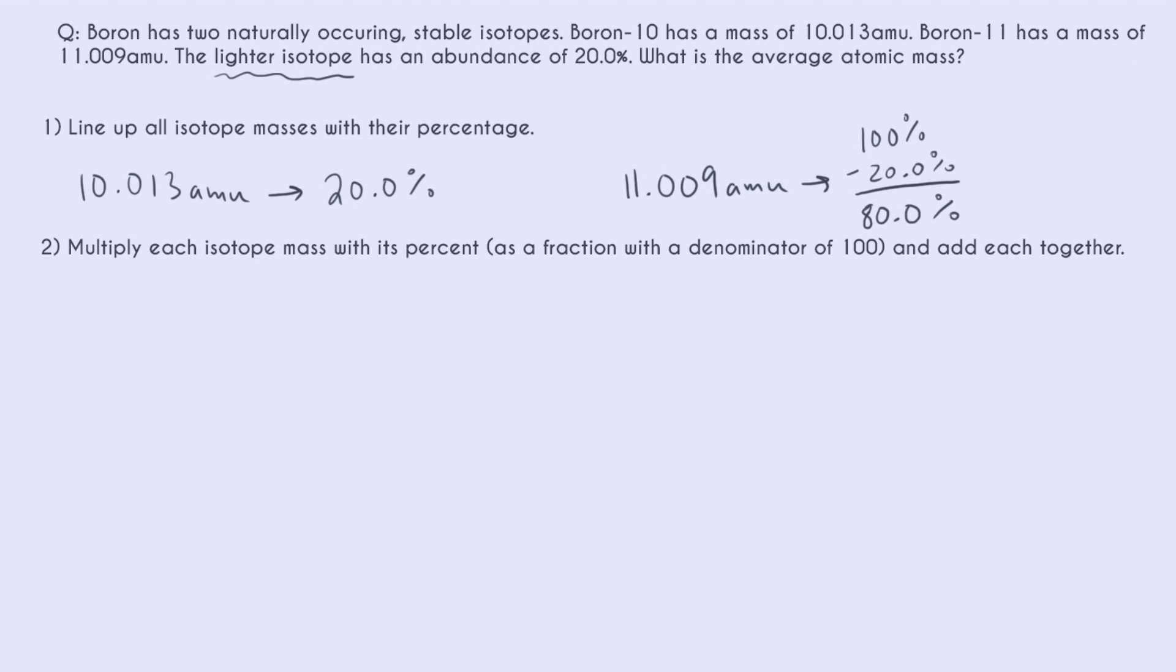So now that we have our isotope masses and their percents, let's go ahead and set up the same type of problem. We're going to multiply each isotope mass with its percent as a fraction with a denominator of 100, and we're going to add everything together. So first I'm just going to get my percents out of fraction form into decimal form. And again, I know this step is tedious, but I will say it completely eliminates mistakes.